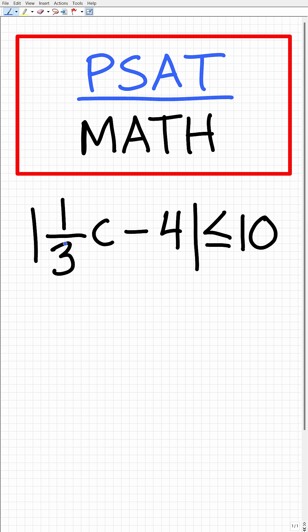We have the absolute value of 1/3 C minus 4 is less than or equal to 10. So how do we solve absolute value inequalities?